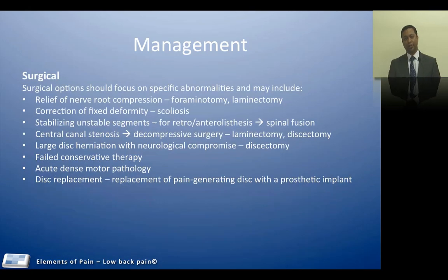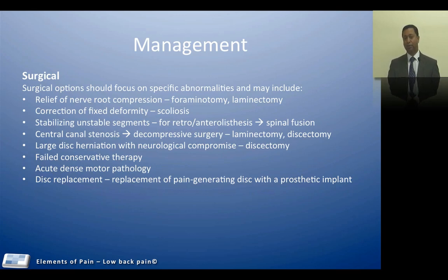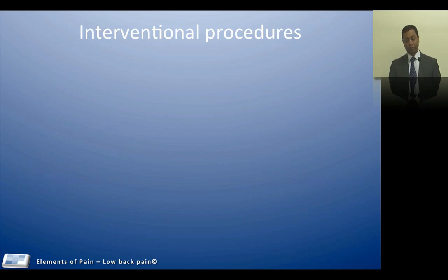Surgical options are meant to address specific abnormalities. For example, a structural change such as scoliosis or kyphoscoliosis which needs surgical correction, or a grade 3 or grade 4 anterolisthesis or retrolisthesis where surgical correction would help stabilization. Nerve root compression could be addressed by foraminotomies or laminectomies. Decompressive surgery for large disc bulges such as laminectomies or discectomies may also be helpful. Surgery can also be considered for failed conservative therapies or acute dense motor pathology. More recent therapies including disc replacement with implants have been trialed, and future therapies include stem cell-related biological models to replace the intervertebral disc.